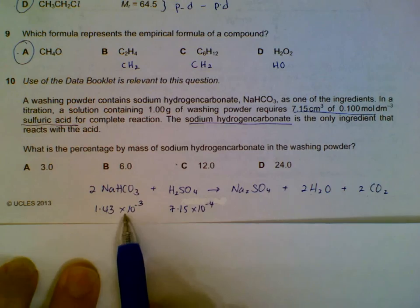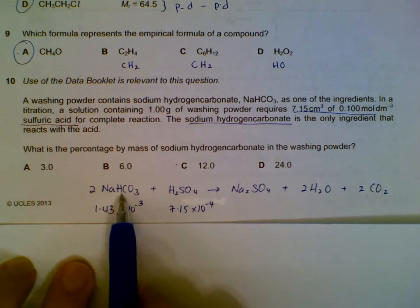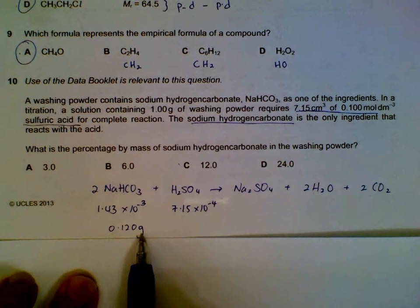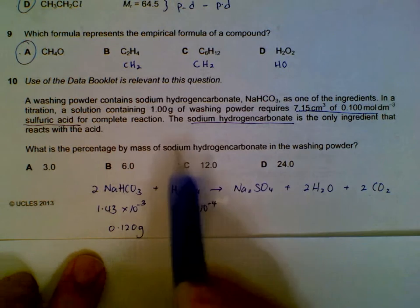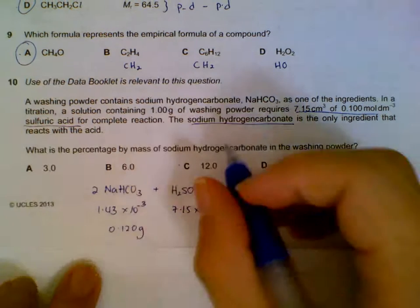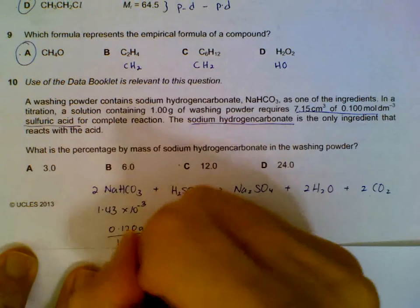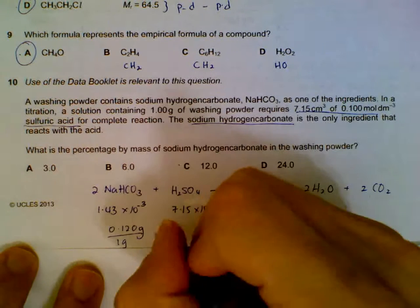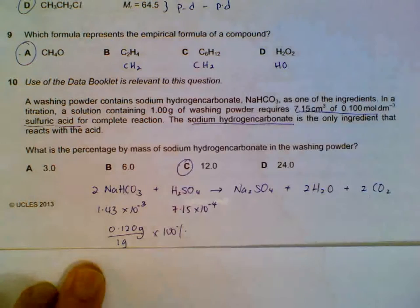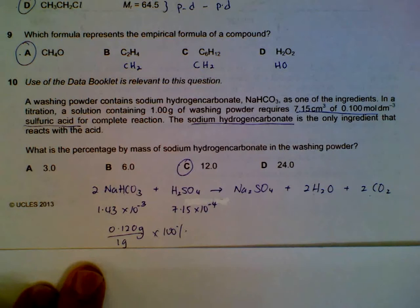By ratio, it will be two times the number of moles of sodium hydrogen carbonate. We multiply by the Mr of sodium hydrogen carbonate to get 0.12 grams per one gram of washing powder. We take the ratio and multiply by 100 percent to get 12 percent containing sodium hydrogen carbonate.